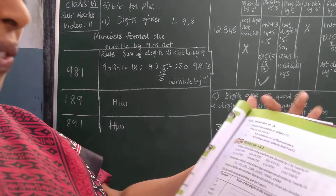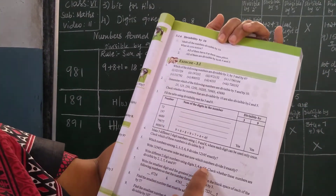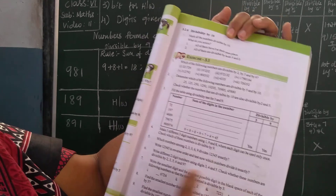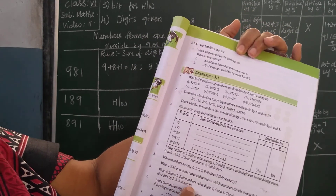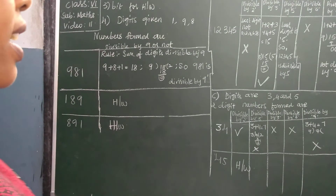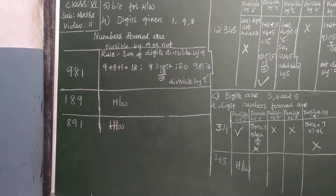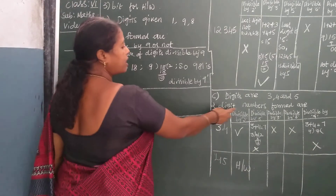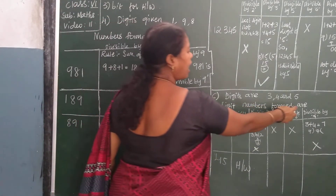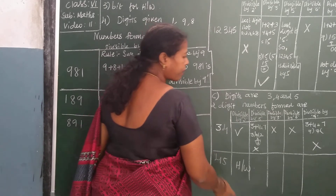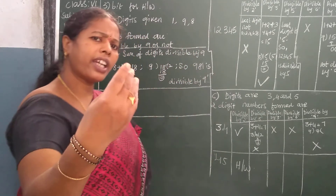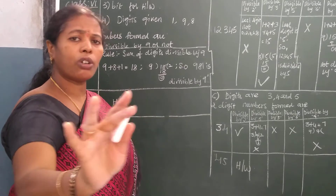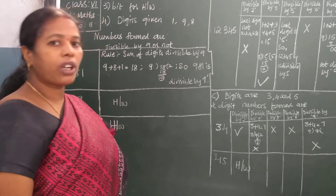Write different 2-digit numbers using digits 3, 4 and 5. Check whether these numbers are divisible by 2, 3, 5, 6 and 9. The digits given are 3, 4 and 5. The 2-digit numbers I formed are 34 and 45. You can take any 2-digit numbers using 3, 4 and 5, but I took 34 and 45.